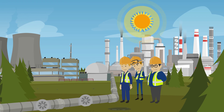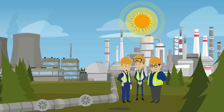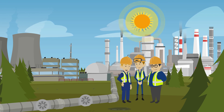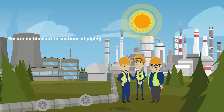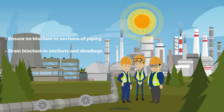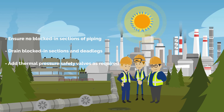Thermal overpressure occurs in isolated regions of a system. When energy is added to the constant volume in the form of heat, high pressures develop, splitting or rupturing equipment and piping. It is best practice to ensure there are no blocked-in sections containing products that can expand or vaporize when heated. This can be accomplished by draining between isolation points or in dead legs. Thermal pressure safety valves can also be installed to mitigate overpressure where isolation and drainage is not practical.